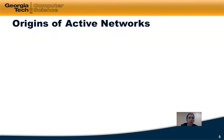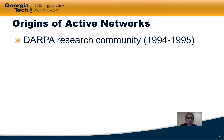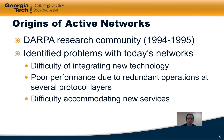Where did active networks come from? Well, in the mid-1990s, the DARPA research community was discussing various problems that existed in networks. In particular, they identified that it was very difficult to integrate new technology into the network, and that sometimes the network would exhibit poor performance because the same operations were being re-implemented at multiple layers of the protocol stack. Finally, it was noted that it was difficult to accommodate new services as they're introduced into the network.